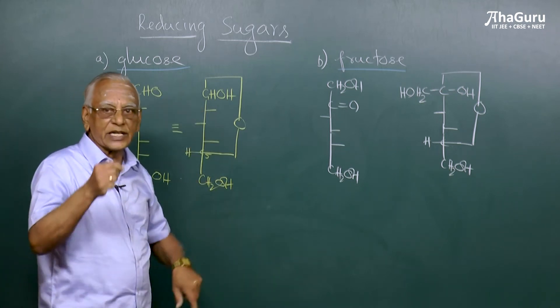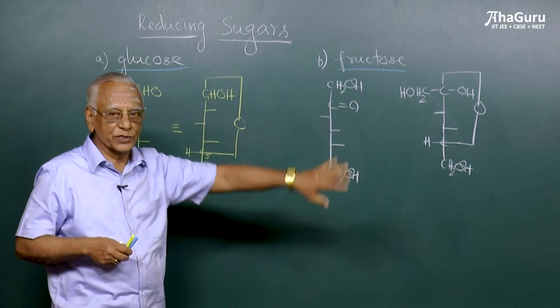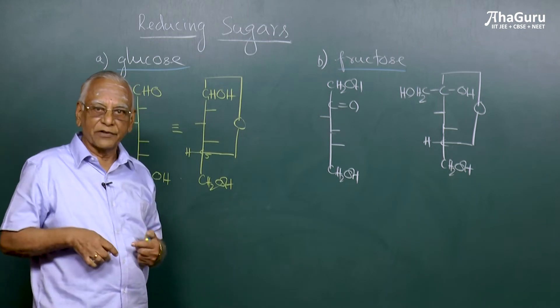And silver is deposited inside. Silver mirror is formed in both the glucose and fructose. So both of them are identified this way.